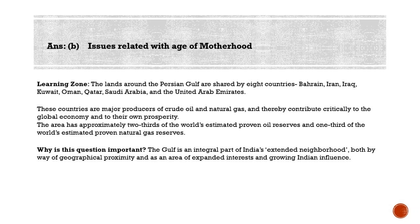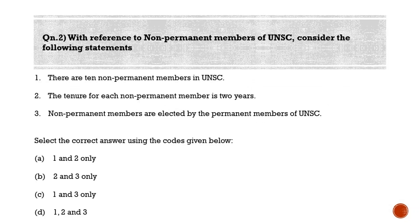Moving to the second question: with reference to non-permanent members of the UNSC, consider the following statements. Statement one: there are 10 non-permanent members in the UNSC. Statement two: the tenure for each non-permanent member is two years. Statement three: non-permanent members are elected by the permanent members of the UNSC. Select the correct answer — option A: one and two only; option B: two and three only; option C: one and three only; option D: one, two and three.